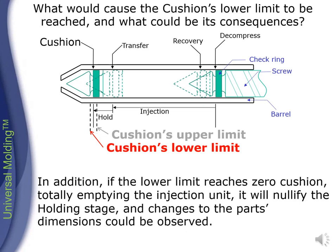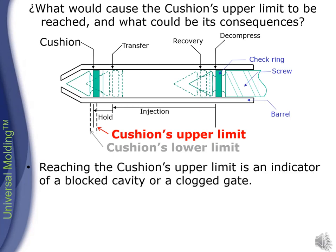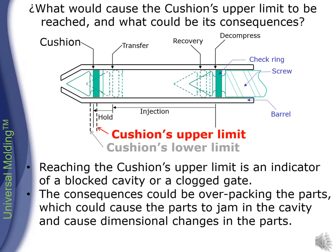In addition, if the lower limit reaches zero cushion, totally emptying the injection unit, it will nullify the holding stage, and changes to the part's dimensions could be observed. What would cause the cushion's upper limit to be reached, and what could be its consequences? Reaching the cushion's upper limit is an indicator of a blocked cavity or a clogged gate. The consequences could be overpacking the parts, which could cause the parts to jam in the cavity and cause dimensional changes in the parts.